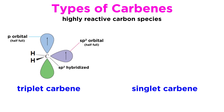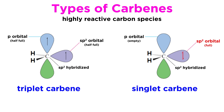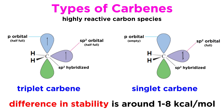Here we can see a triplet carbene. The carbon atom is sp2 hybridized, just like a carbocation or a carbon radical. This results in a trigonal planar geometry, with the remaining unhybridized p orbital extending in perpendicular fashion with respect to the plane of the molecule. With the triplet carbene, one of the nonbonding electrons sits unpaired in the third sp2 orbital, and the other nonbonding electron sits unpaired in the unhybridized p orbital. With the singlet carbene, however, both of the nonbonding electrons are in the sp2 orbital, paired and with opposite spin. The difference in stability for these forms is very small, as little as one kcal per mole when highly substituted, and up to 8 kcal per mole for simpler structures, and either form may be the more stable form depending on the specific carbene in question.